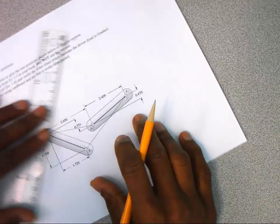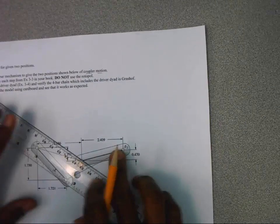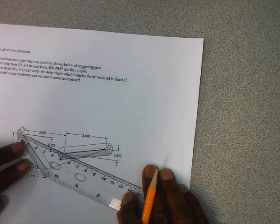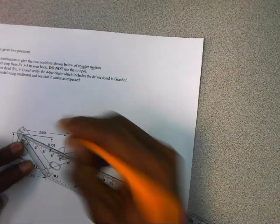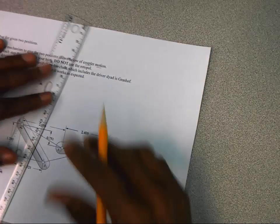We need to perpendicularly bisect these lines. So we're going to find about the midpoint of both of them and use a perpendicular bisector.